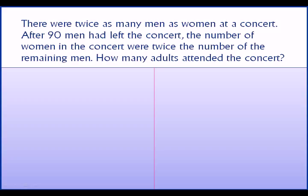There were twice as many men as women at a concert. After 90 men had left the concert, the number of women were twice the number of the remaining men. How many adults attended the concert? The keyword is 'twice as many as', and the entity that comes after 'as many as' is women.